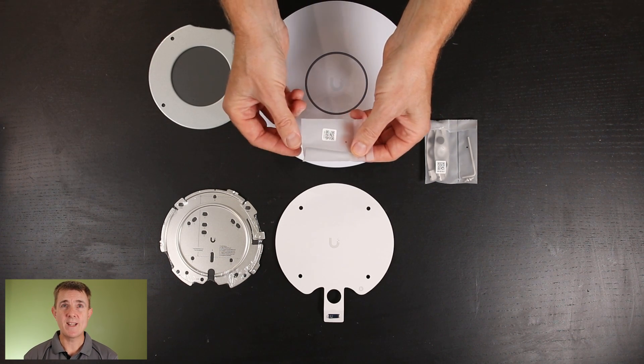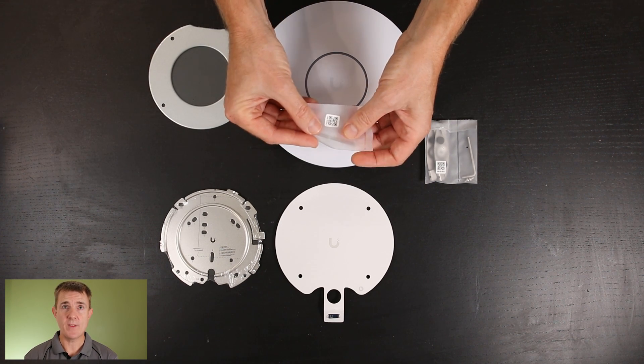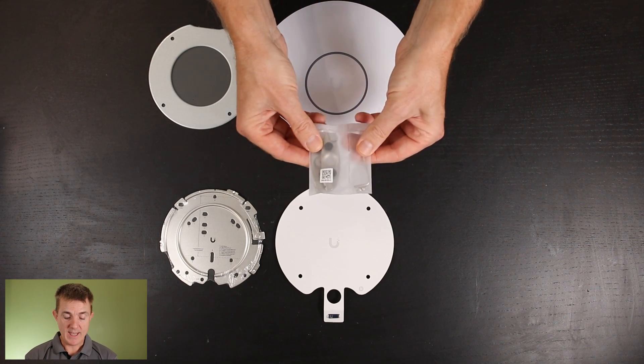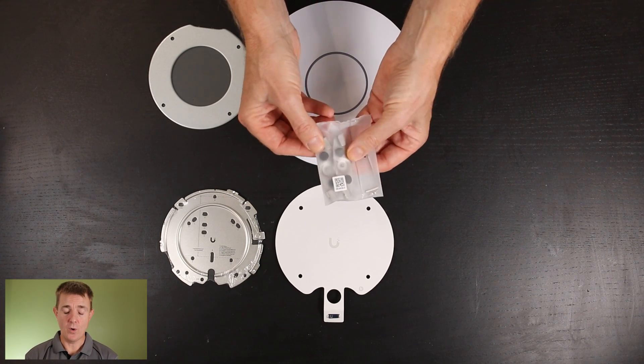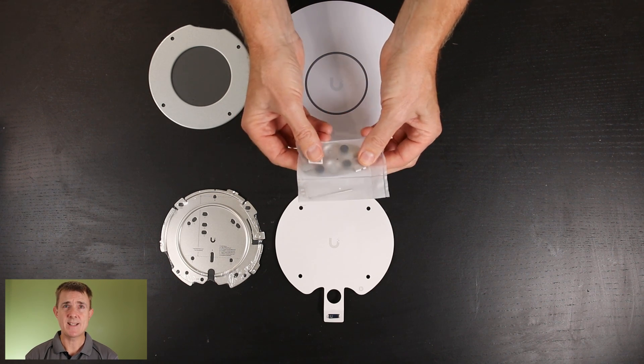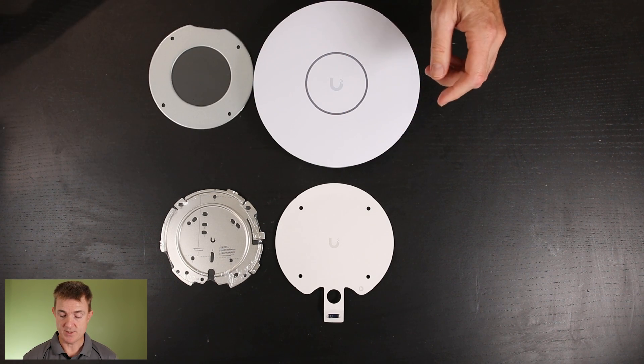You're going to get your quick release tool. This allows you to unlock this from the surface mount bracket. You are going to get a packet. These are for if you've got ceiling rails. So you've got a suspended ceiling. These allow you to clip directly onto the suspended ceiling.